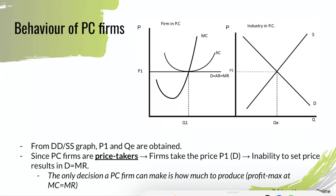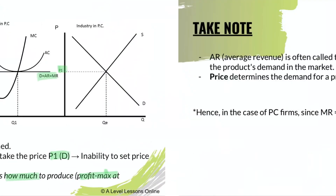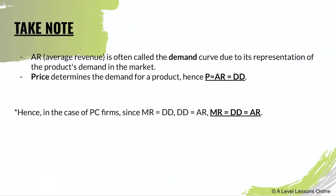To recap: from the demand and supply graph, P1 and Qe are obtained. Since PC firms are price takers, they take the price P1 due to their inability to set price, resulting in demand equaling marginal revenue. The only decision a firm makes in a PC market is how much to produce — specifically at the profit-maximizing output where MC equals MR. Average revenue is often called the demand curve because it represents the product's demand in the market.